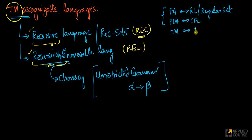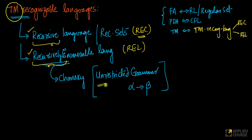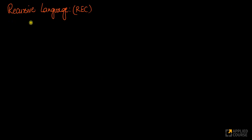Given a Turing machine, we have Turing machine-recognizable languages, and there are two types: recursive languages and recursively enumerable languages. They are generated by unrestricted grammars in the Chomsky hierarchy. Let's now understand what a recursive language is and how it differs from a recursively enumerable language.